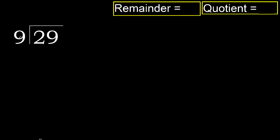29 divided by 9. 2 is less, therefore next. 29 is not less, therefore with 29.